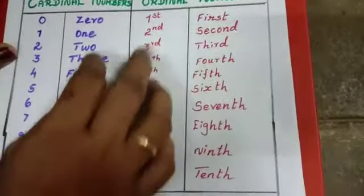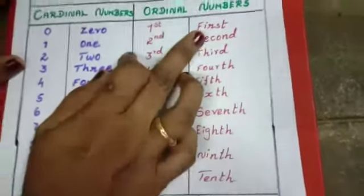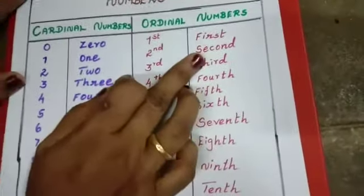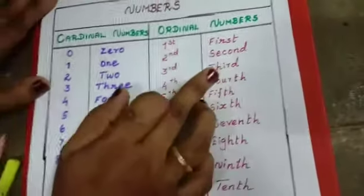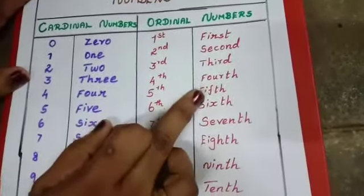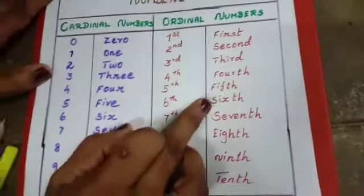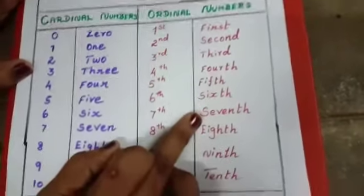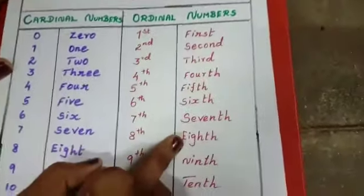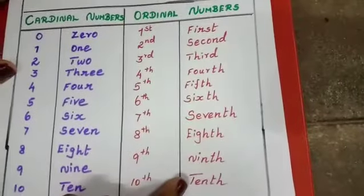Ordinal numbers are: 1st, 2nd, 3rd, 4th, 5th, 6th, 7th, 8th, 9th, 10th.